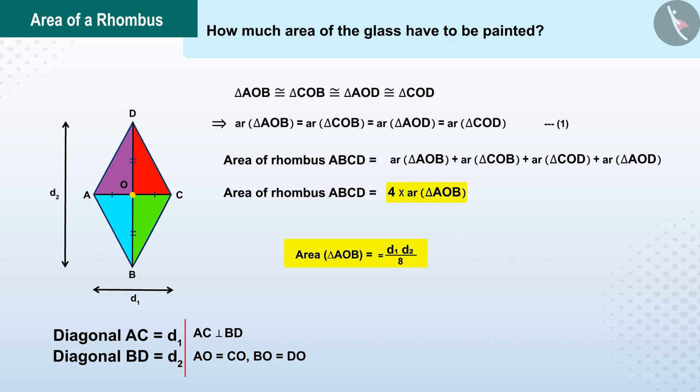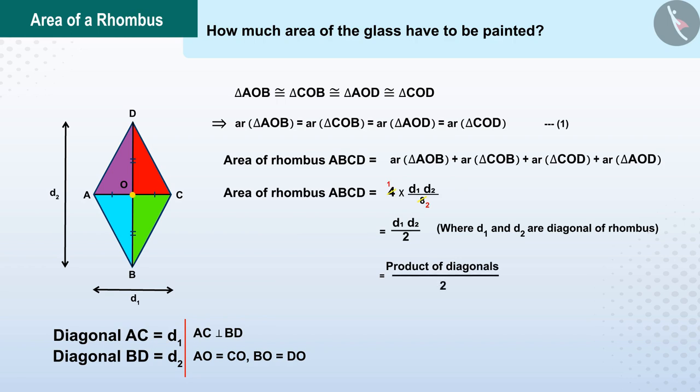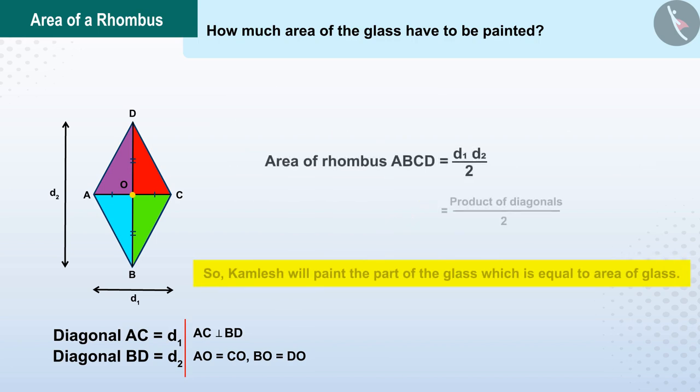Using the area of triangle AOB, thus, the area of a rhombus is half the product of its diagonals. Kamlesh will paint on the same part of the glass as the area of the glass.